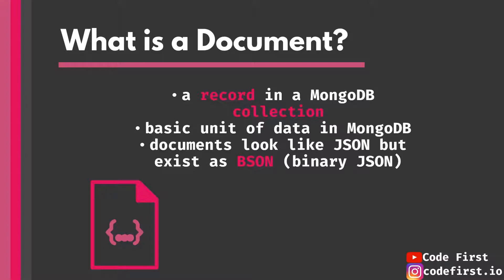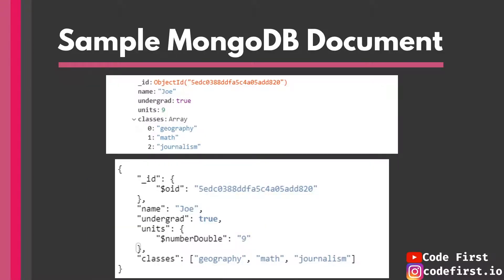This is a sample MongoDB document. It's like a key-value pair view — all of this together is a document. This is the ID field, this is the key, this is the value. It's just a collection of key-value pairs, and this is an array. There are two different versions of how you can display these documents. This JSON display starts with curly braces, and this is how an array looks in JSON.